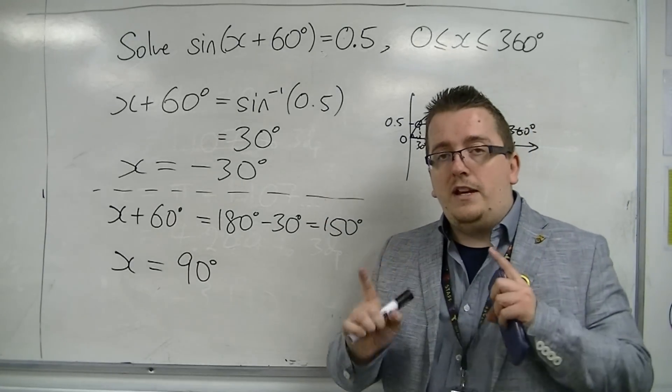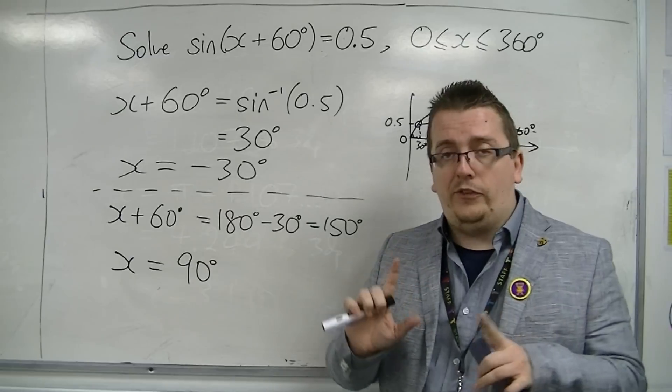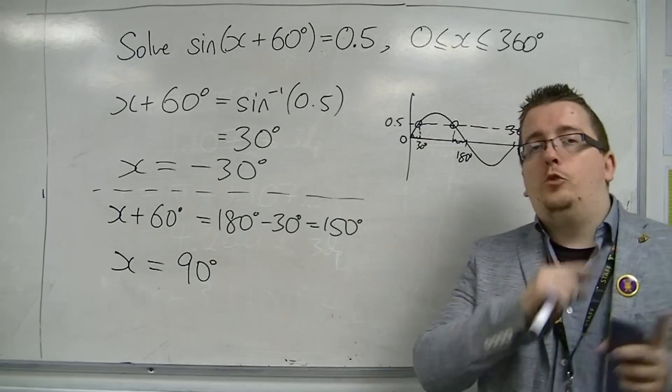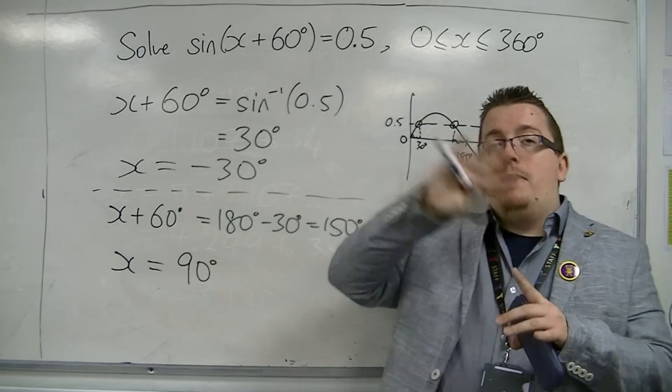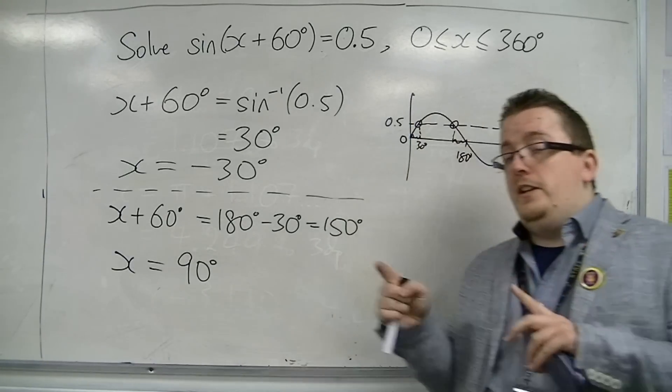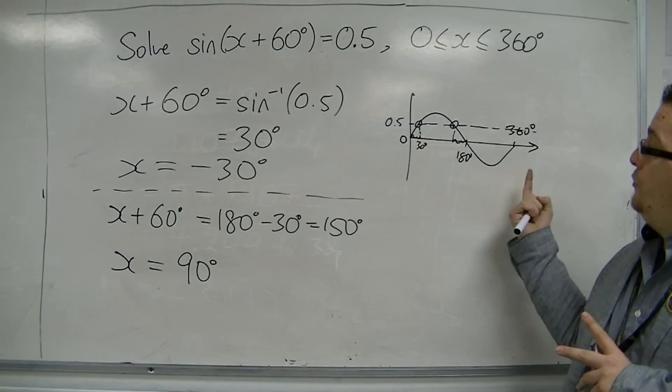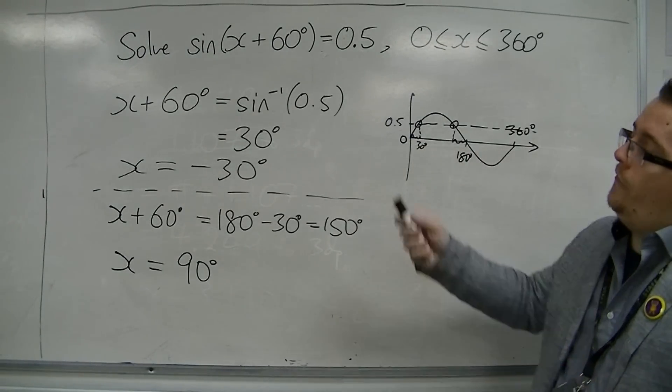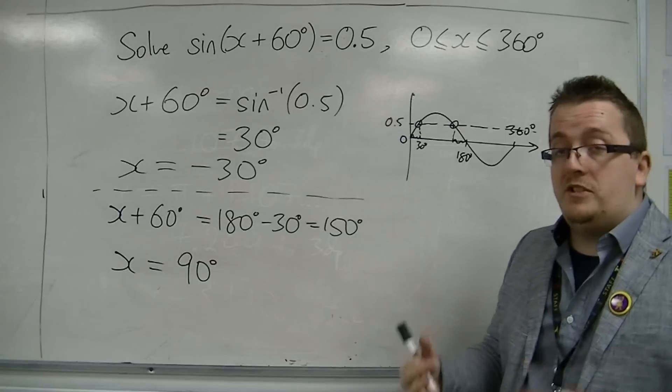So the way to make sure I'm getting a solution that is inside is to add or subtract amounts of the period of sine. So the sine curve has a period of 360 degrees. So if I add 360 degrees to minus 30,